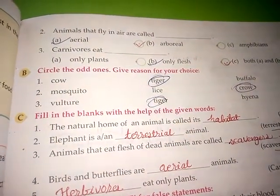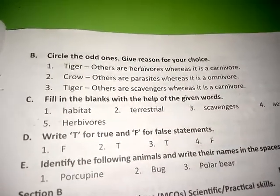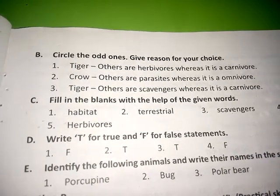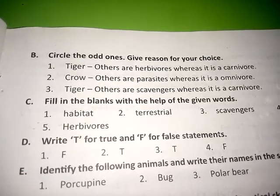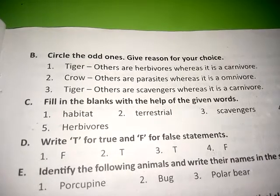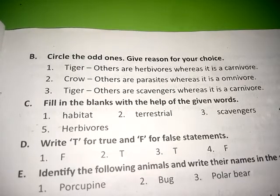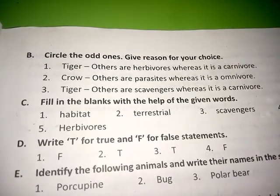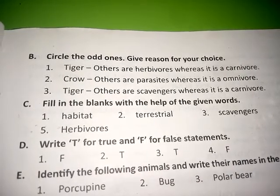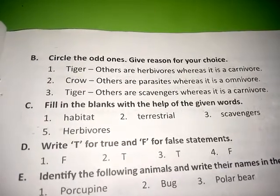Third: vulture, tiger, hyena. Answer is tiger. First number answer is tiger because others are herbivorous whereas tiger is carnivorous. Second number answer is crow because others are parasitic animals whereas crow is omnivorous. Third number answer is tiger because others are scavengers whereas tiger is carnivorous.